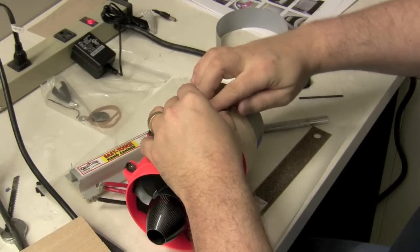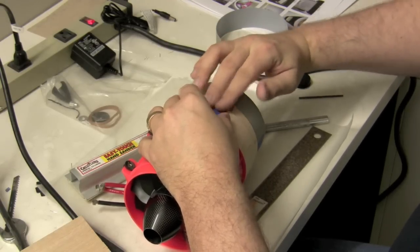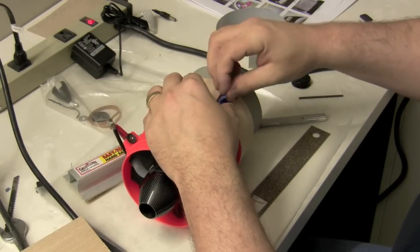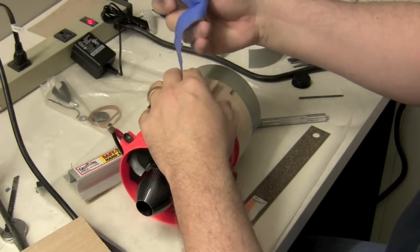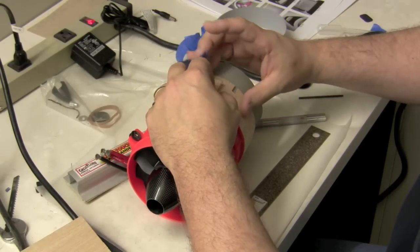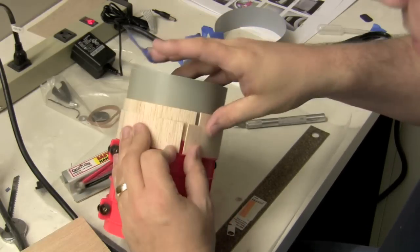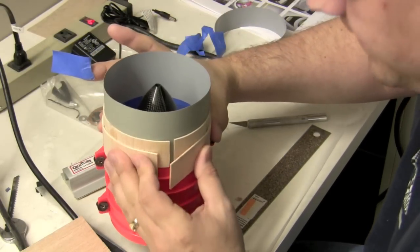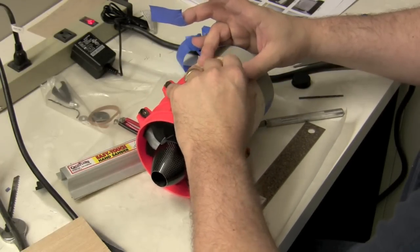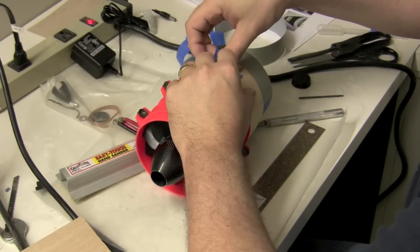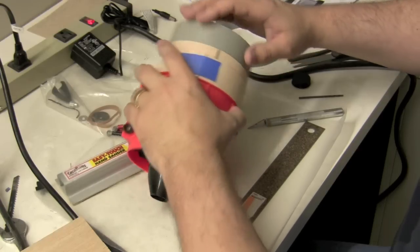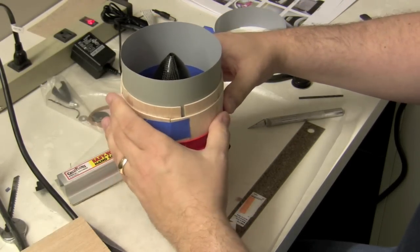And then we're going to tape it. We need a bigger piece of tape. Let's try it again. Wrap it around real tight, and then put your tape on. Okay, there we go. Alright.